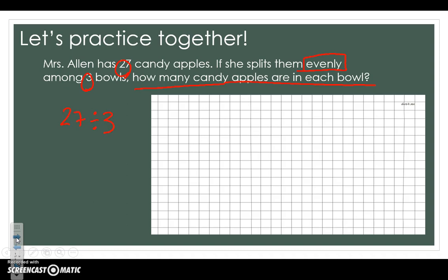We're going to start by counting out three of our squares on the grid. One, two, three. We're going to keep going until we get to 27, so we can find out how many equal groups of three there are.